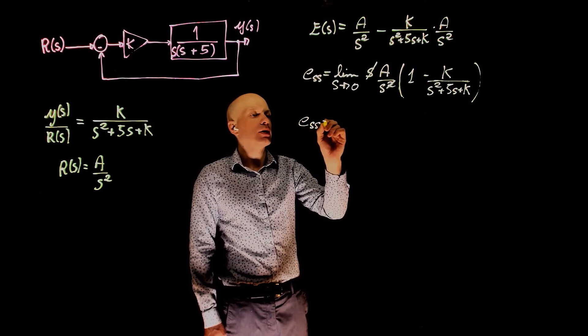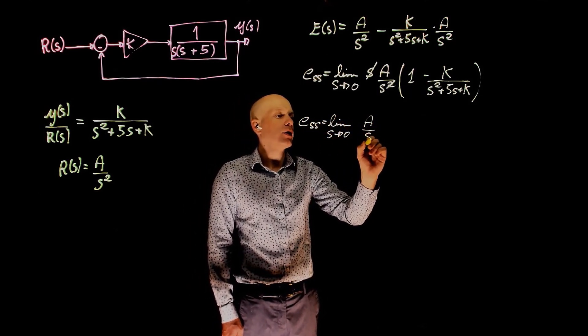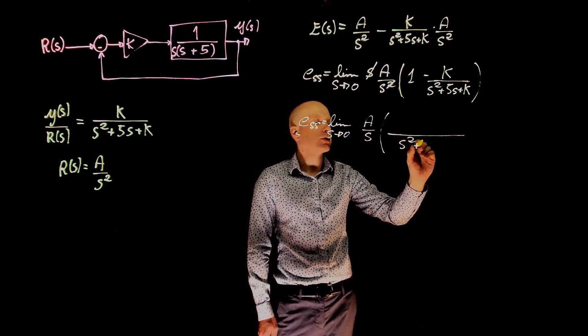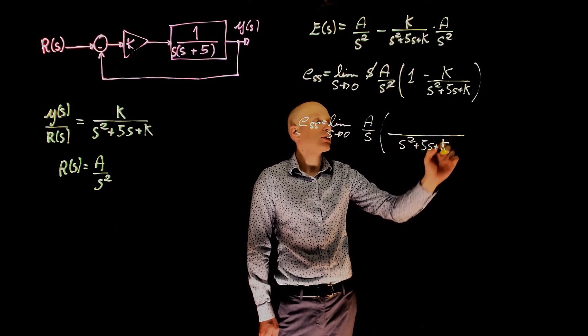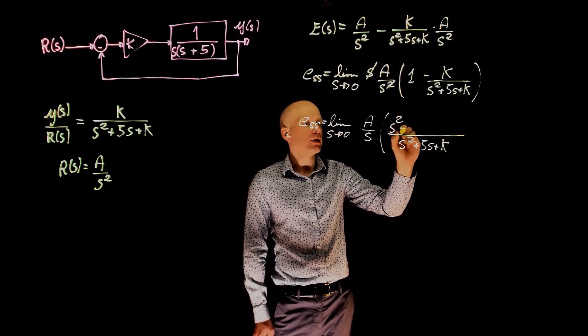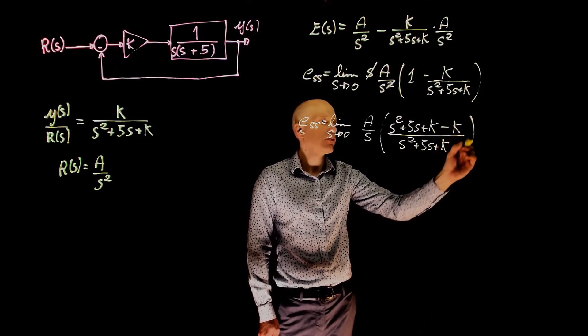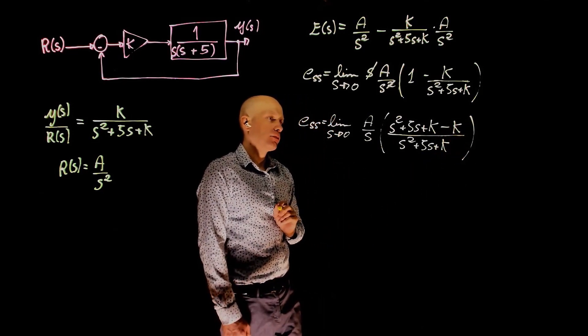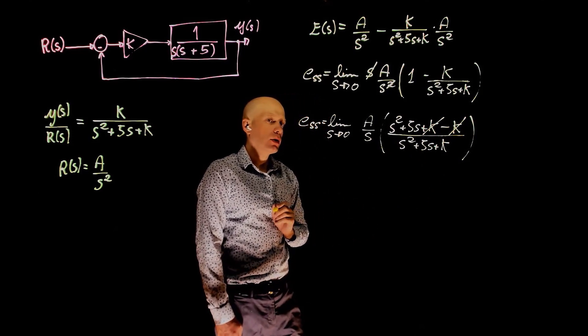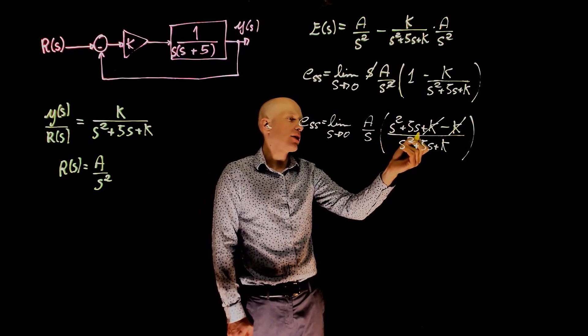So the error in steady state is the limit when S tends to zero of A over S times, a common denominator here is S squared plus 5s plus k. This times one is S squared plus 5s plus k minus that k. Now this k and this k will cancel. And we can now factor this S's. We have S squared plus 5s. This is the same as S times S plus 5.